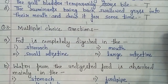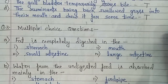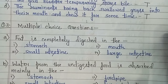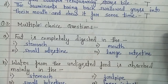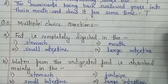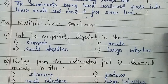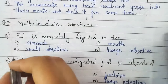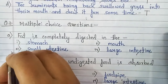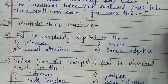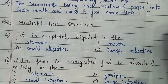Moving on to the Multiple Choice Questions. First question: where is fat completely digested? The options are stomach, mouth, small intestine, and large intestine. In the large intestine, undigested food is stored, so the answer is small intestine — fat is completely digested in the small intestine.